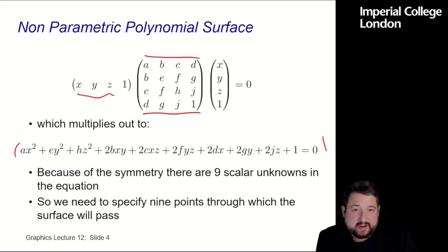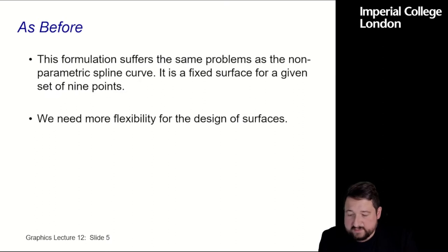So I can come up with a non-parametric polynomial surface in x, y, and z here. So in this case here in 3D, I need 16 parameters, scalar parameters here to work out this polynomial. And this can be multiplied out to this quite monstrous equation here. So because of the symmetry, there are nine scalar unknowns in this equation. So we need to specify nine points, at least, to get a surface that will fit that bill here so that I can get for every x, y, and z coordinate. So this formulation suffers basically the same problems as non-parametric spline curves. It is a fixed surface with a set of nine points. I cannot model details with things like that. I also have the problem of ambiguities.